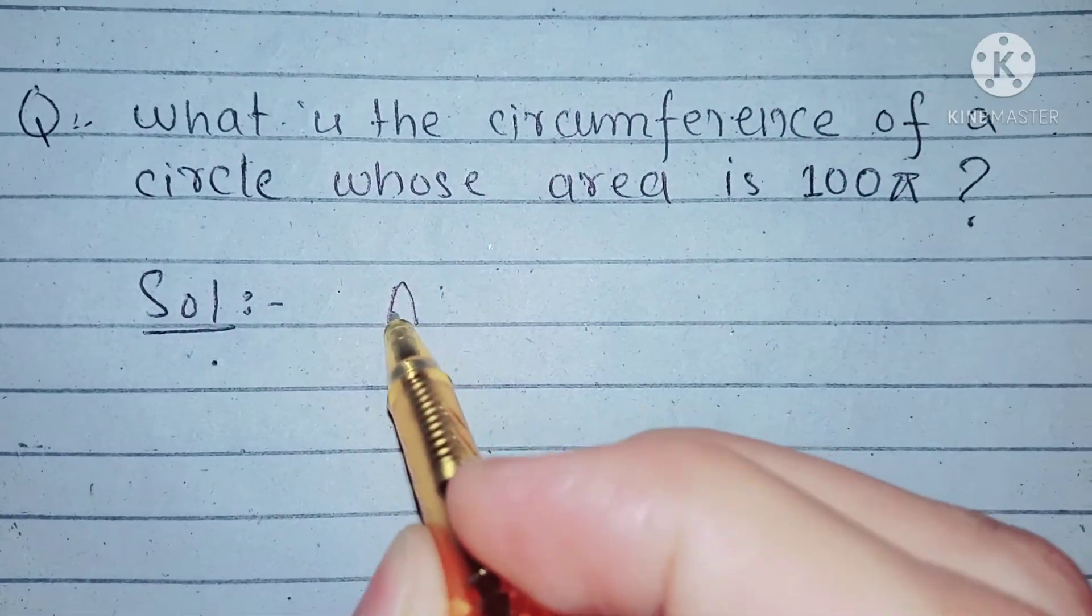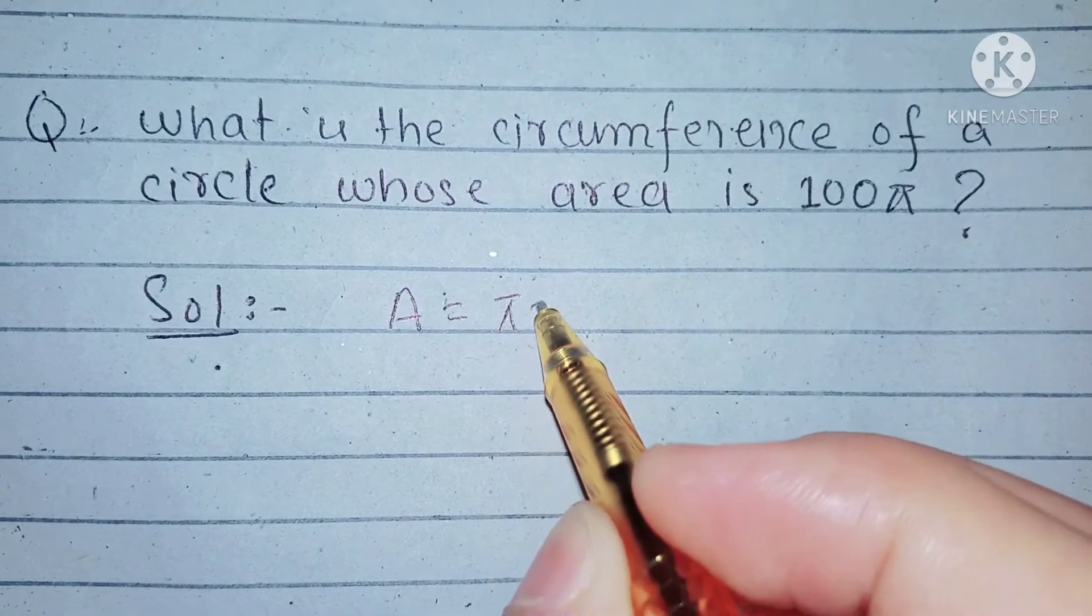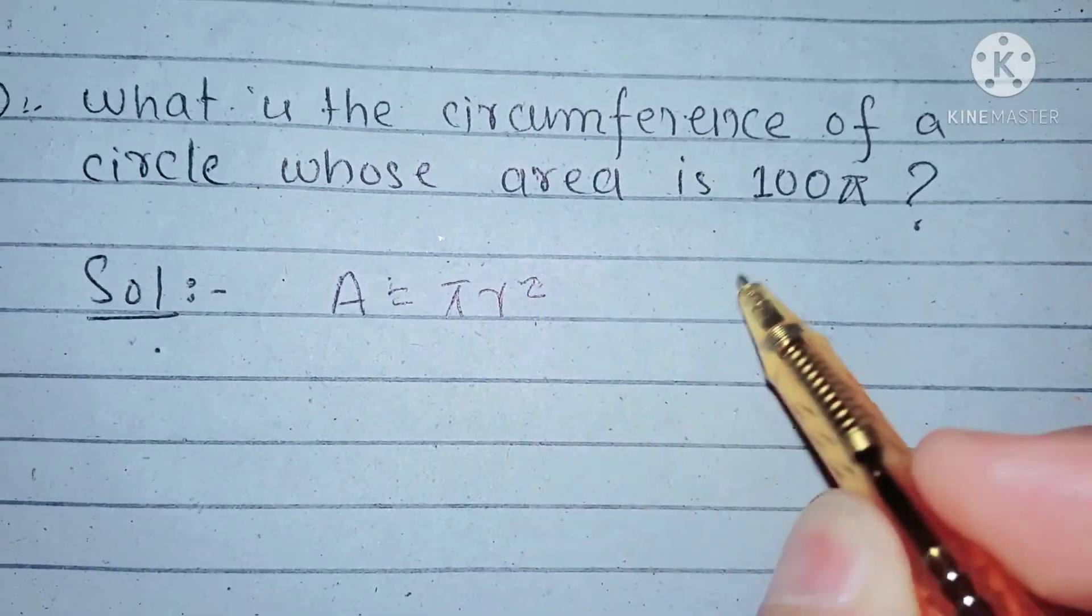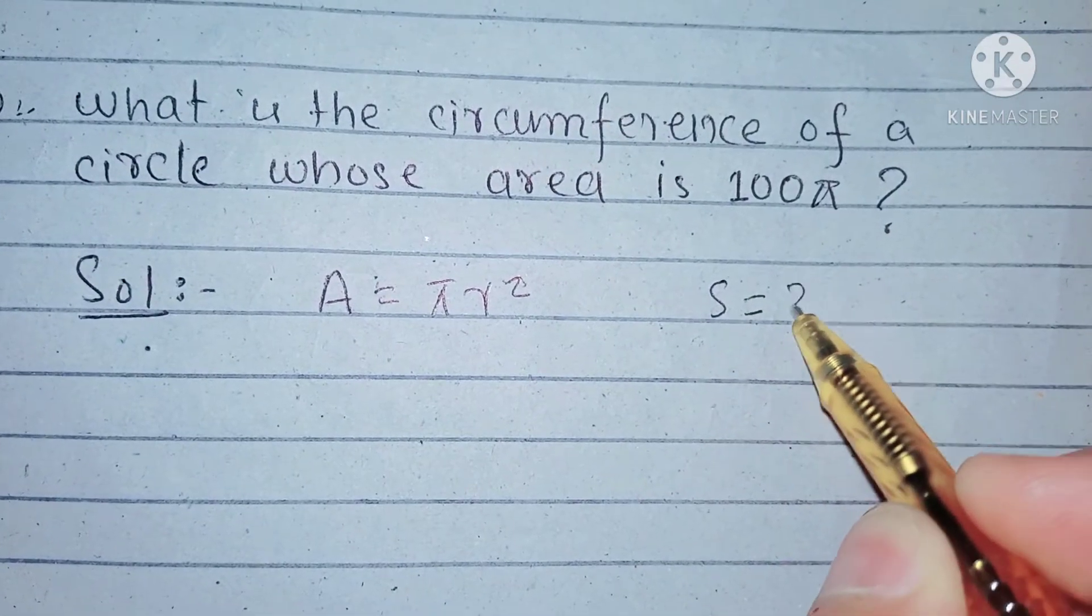As we know that area of a circle is equal to πr² and similarly circumference of a circle is given by 2πr.